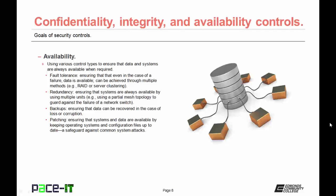Then there is availability. Availability controls are using various control types to ensure that data and systems are always available when required. Availability controls can be implemented through various methods. One method is fault tolerance — this is ensuring that even in the case of a failure, data is available. It can be achieved through multiple methods, including RAID or server clustering.